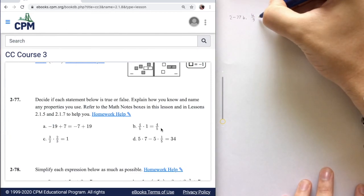4 over 5, or 4 fifths, multiplied by 1, equals 4 over 5.